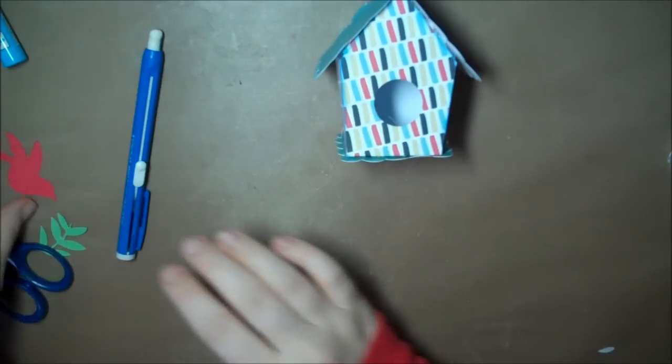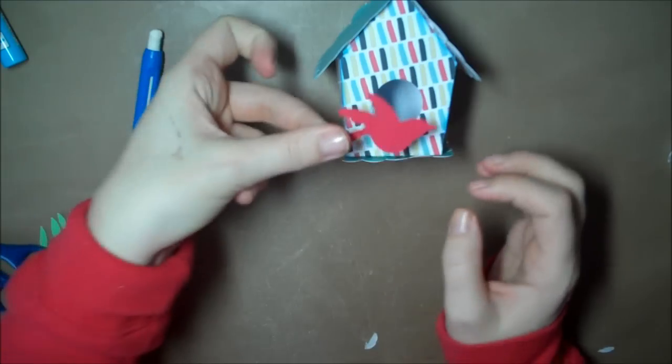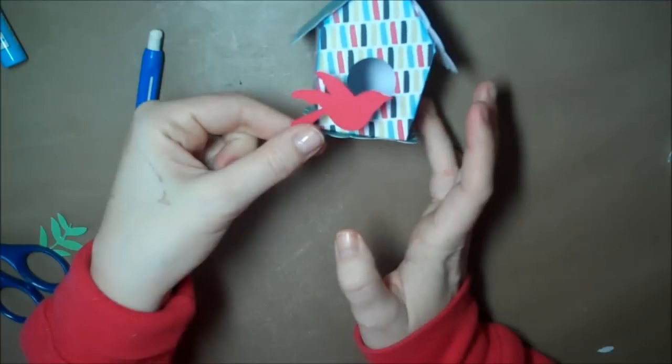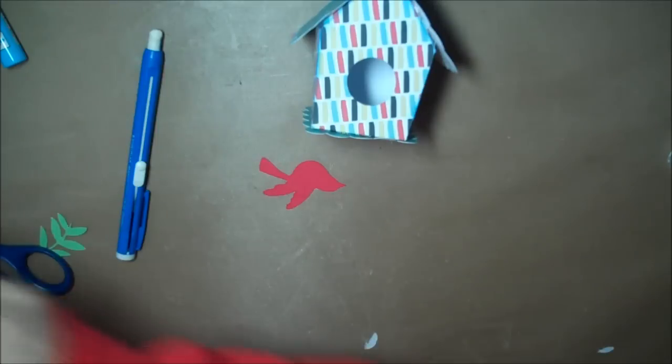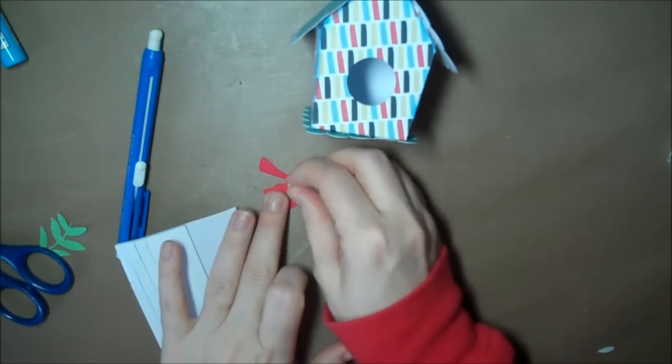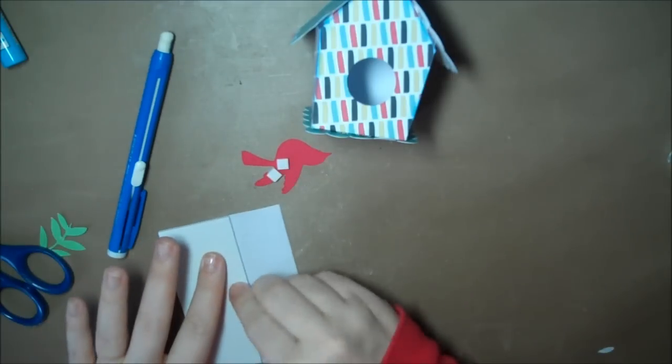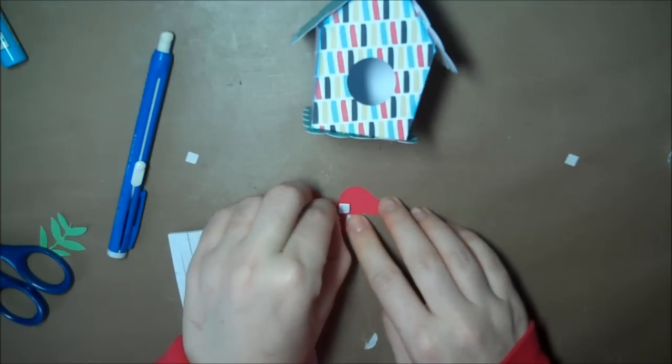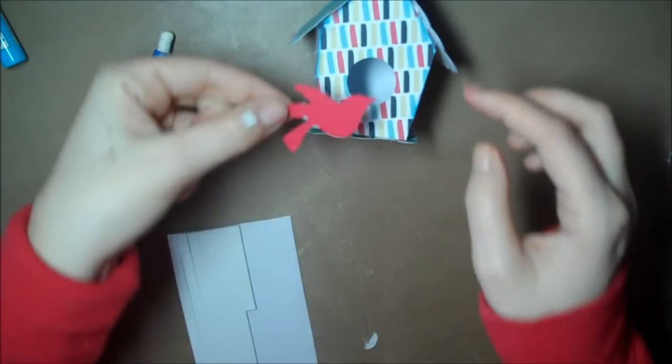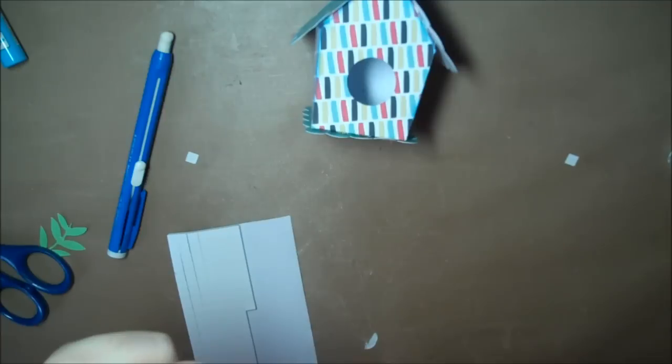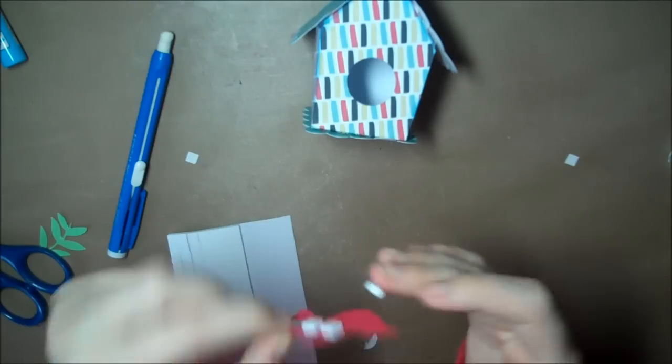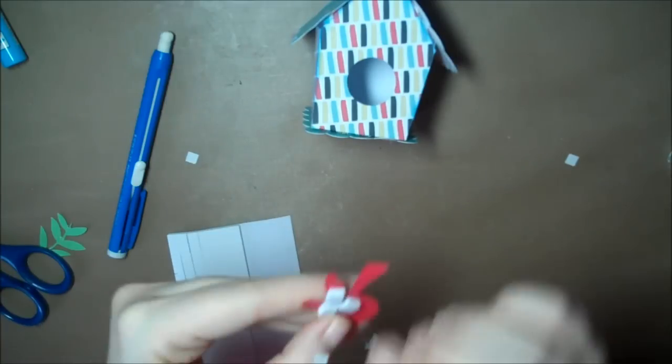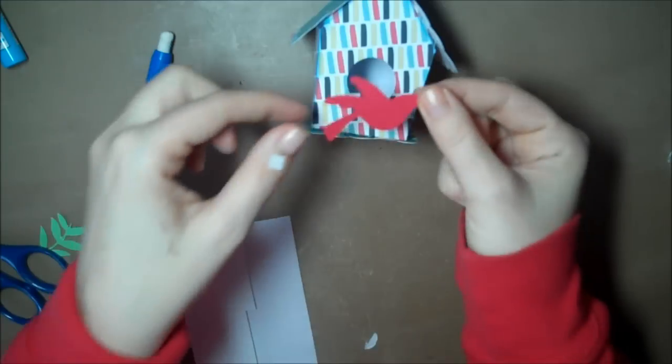Now the next step is to decorate your box. So this bird, I just cut it out. I took the red from the box here and I used the serenade cartridge to cut out this bird. So what I'm just doing is putting foam dots over here on the bird. And just putting it slightly over the top of the hole so it looks like the bird's flying over. Okay, like so.